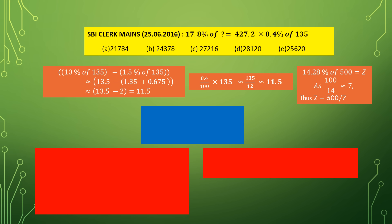We can finally calculate the right-hand side as 430 multiplied by 11, plus 430 multiplied by 0.5 (that is 430 by 2), giving 4730 plus 215 equals 4945 approximately. Now for the left-hand side, we have 17.8%, approximately 18%. We check: 18 into 5 is 90 and 18 into 6 is 108, so 100 is not exactly divisible by 18 — there is a large gap, so we will not use that technique.